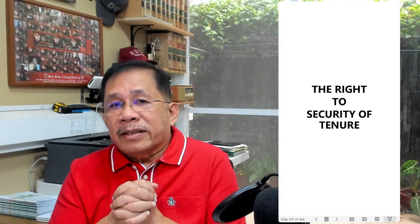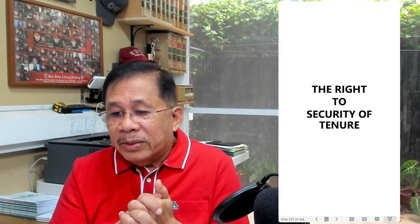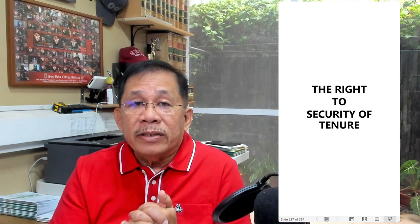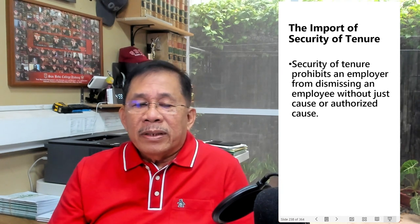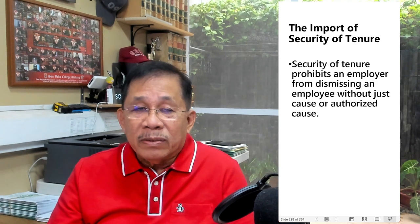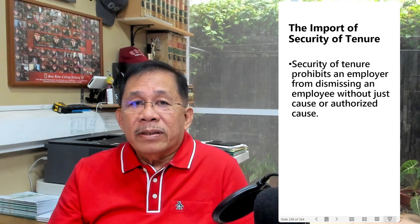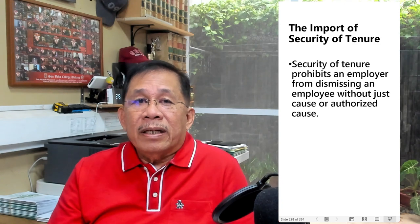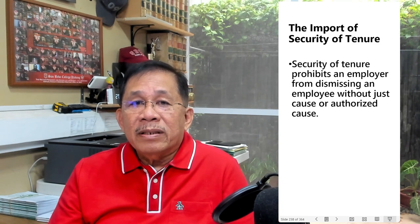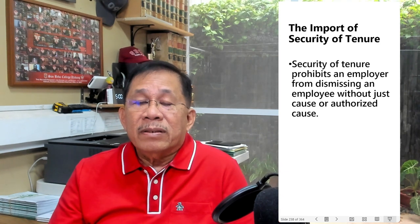We move to the next topic: the right to security of tenure. Security of tenure prohibits an employer from dismissing an employee without just cause or without authorized cause. Stated otherwise, an employer can validly dismiss an employee only for just cause or for authorized cause.